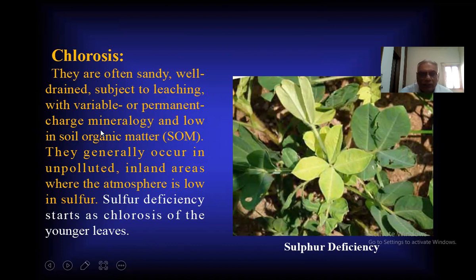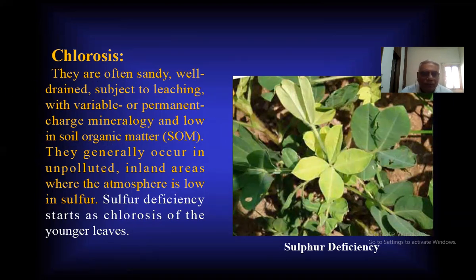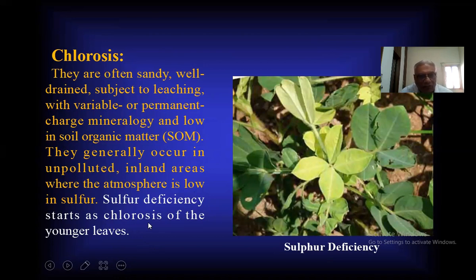Sulfur-deficient soils are often sandy, well-drained, subject to leaching, with variable or permanent charge mineralogy and low in soil organic matter. They generally occur in unpolluted inland areas where atmospheric sulfur deposition is low. Sulfur deficiency is characterized as chlorosis of the younger leaves — chlorosis is observed in younger leaves, not in older leaves.